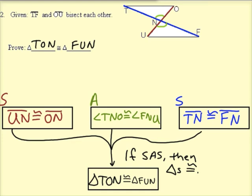Okay, so why are all of these segments congruent? The red segments, UN and ON, why are they congruent? Well, they're congruent because TF and OU bisect each other. And what that means is, I know that TF bisects OU.